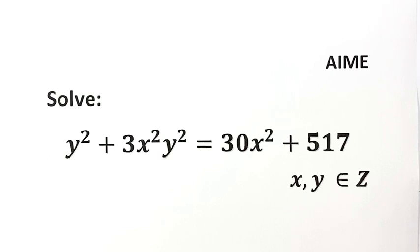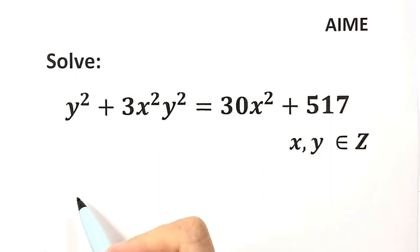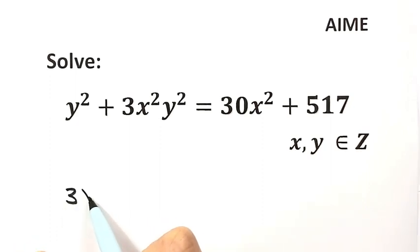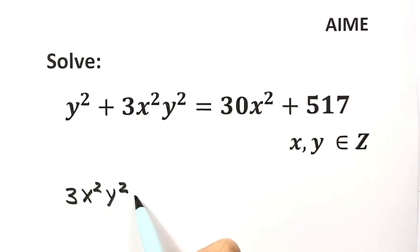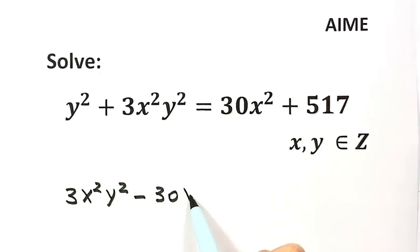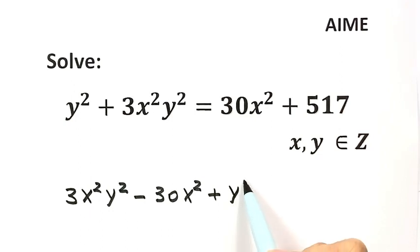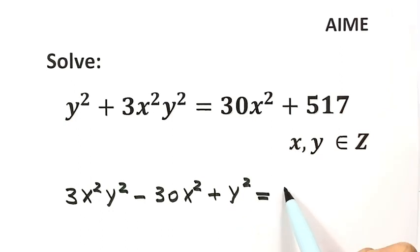We're going to start by moving this term to the left hand side. So here: 3x squared y squared minus 30x squared plus y squared equals 517.